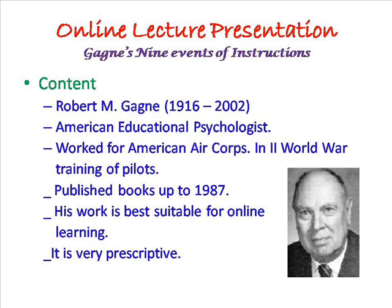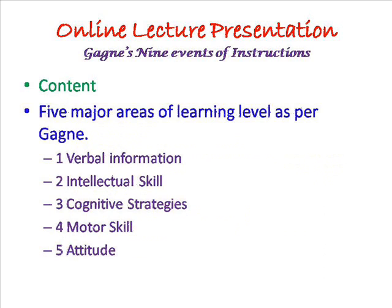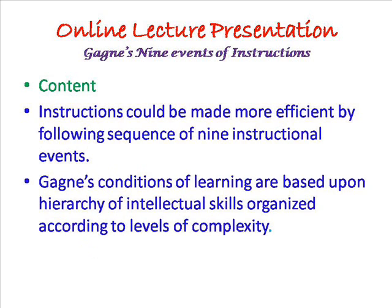His work is best suitable for online learning and distance education. It is very prescriptive. He identified 5 major areas of learning levels. First is verbal information. Second, intellectual skills. Third, cognitive strategies. Fourth, motor skill. Fifth, attitude. Instructions could be made more efficient by following a sequence of 9 instructional events.